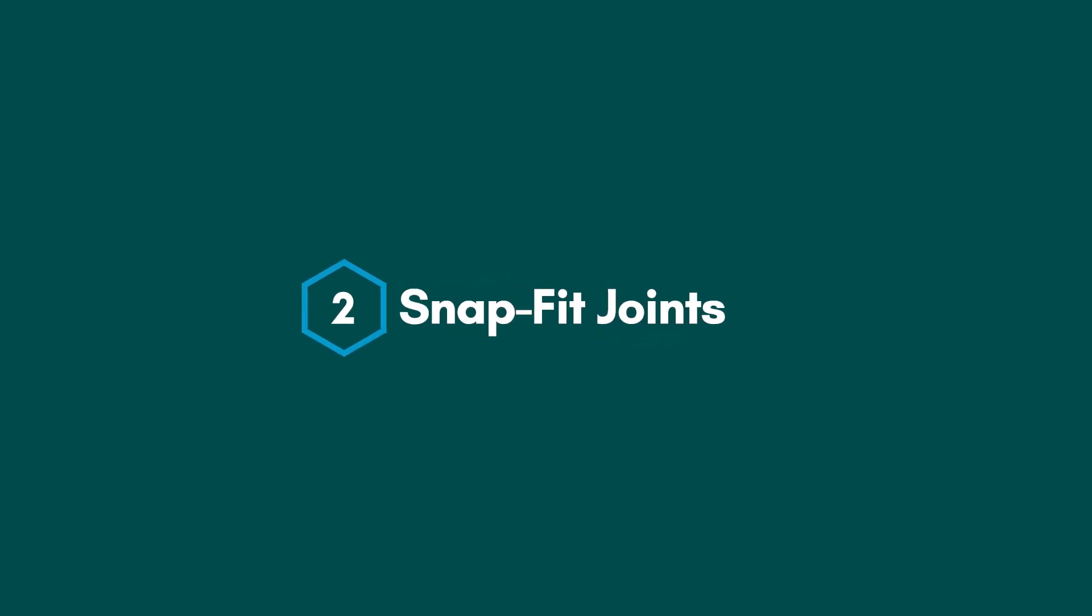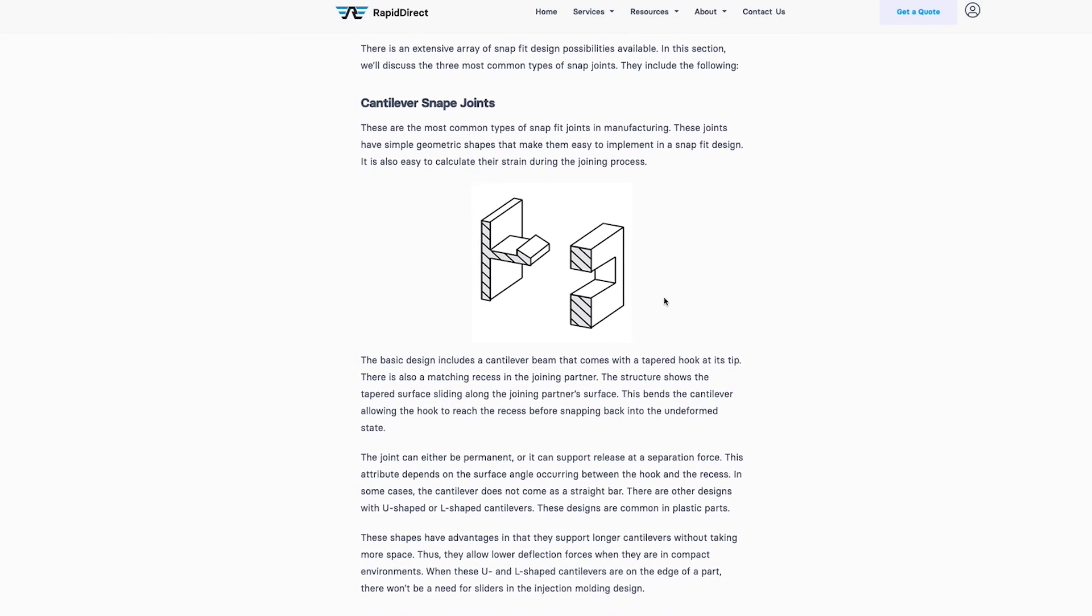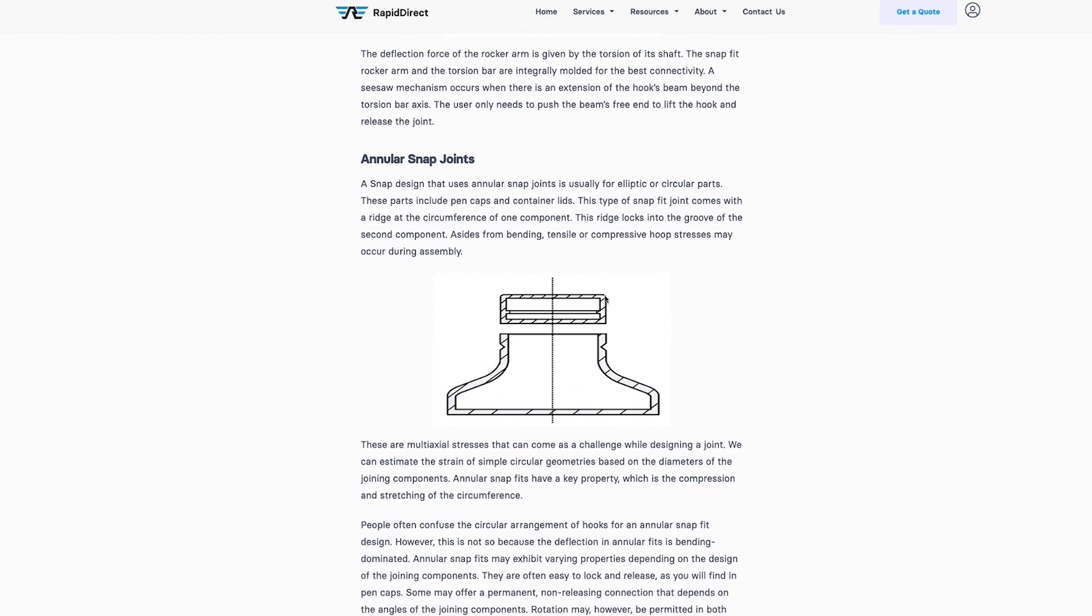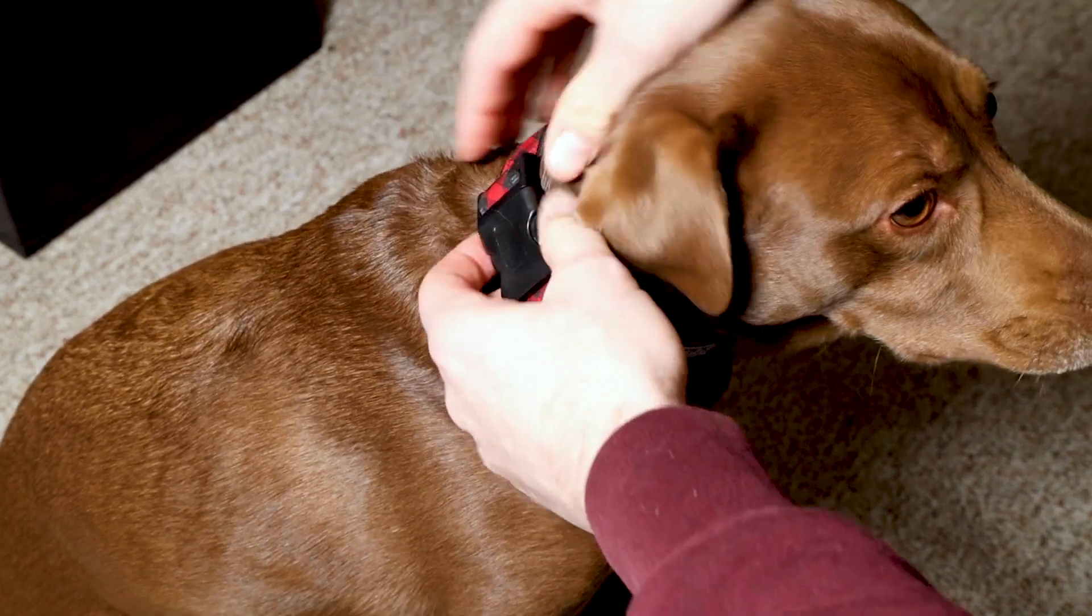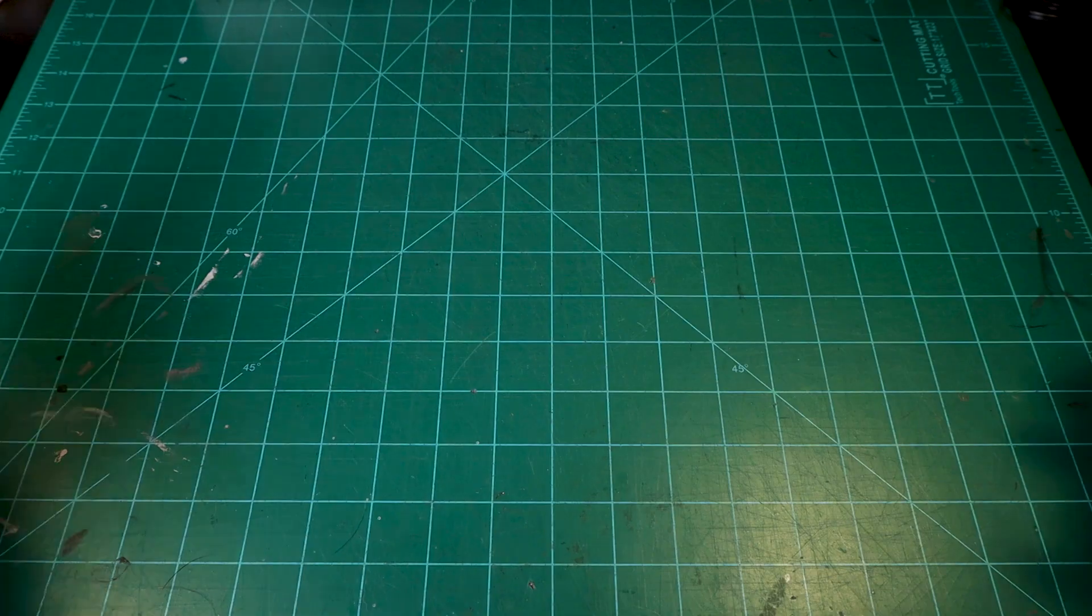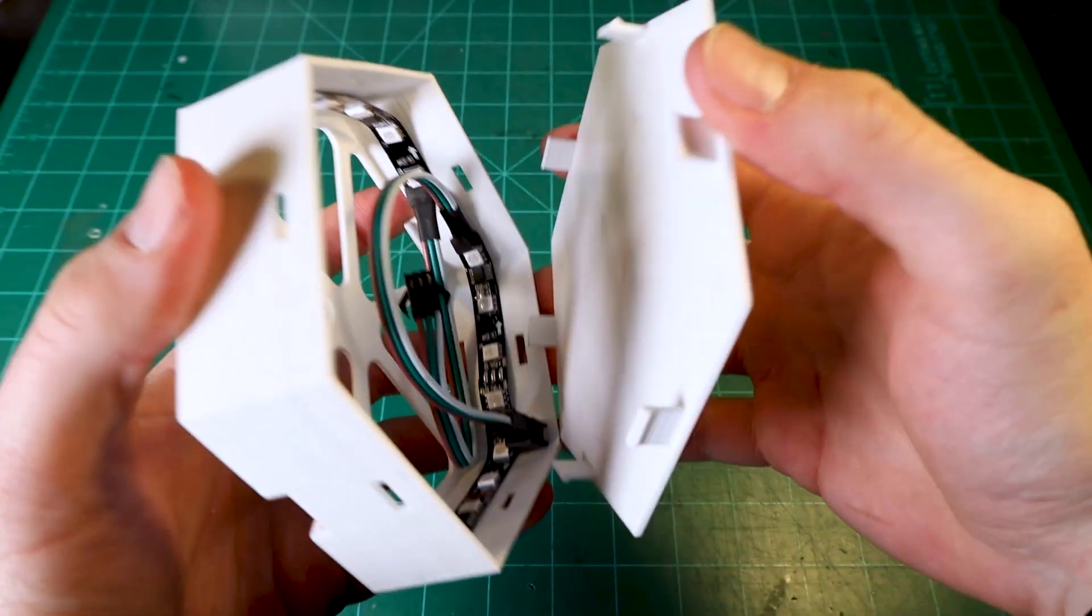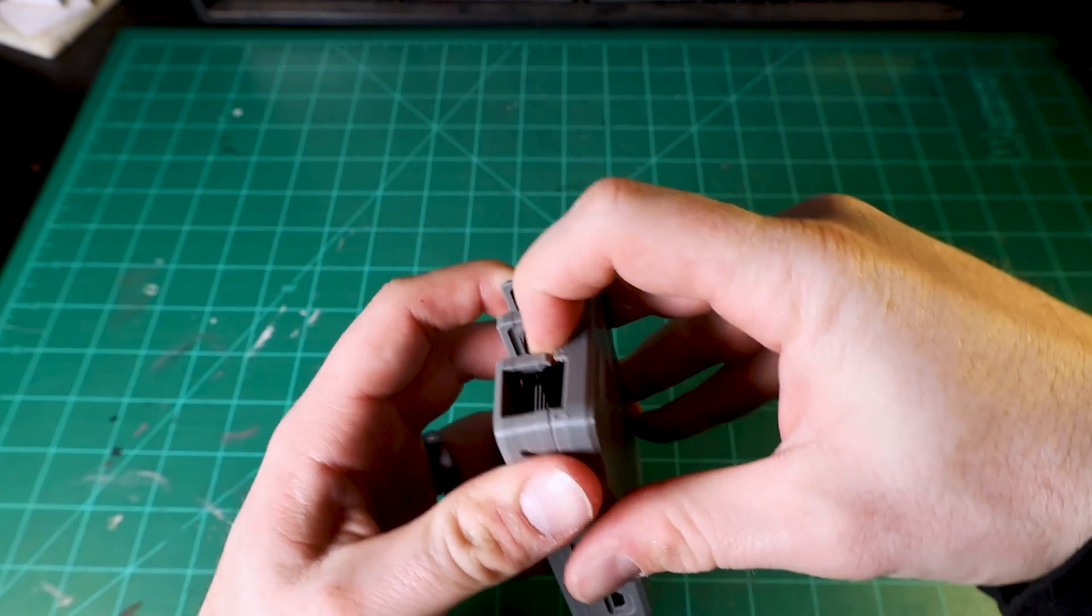Which brings me to method number two: snap fit joints. Snap fit joints are simply a way of utilizing the mechanical properties of the plastic to keep the parts joined together, usually in the form of a stud, hook, or a bead. Snap fit joints are used all over the place today in anything from that clip that keeps my dog's collar on to the mechanism designed to keep a pen cap from falling off. These types of joints are great because they require very little effort to assemble and there are many different types of snap fit joints so you can use whichever one suits your needs.